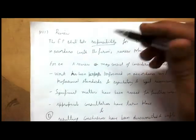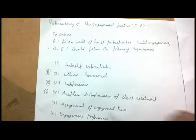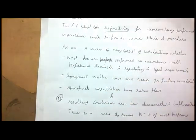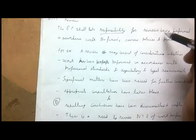After engagement performance, the next responsibility of the engagement partner is review. The engagement partner shall take responsibility for reviews being performed in accordance with the firm's review policies and procedures. In the KPMG manual, there are review policies and procedures for each aspect of the audit. The engagement partner confirms that reviews are performed per those policies.